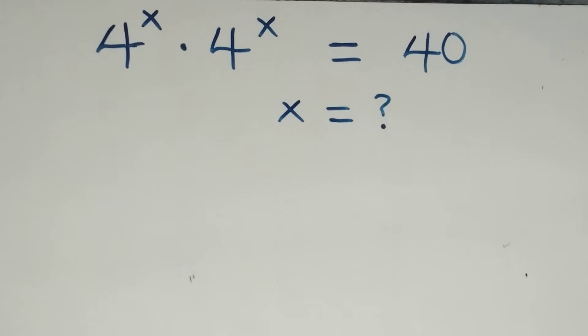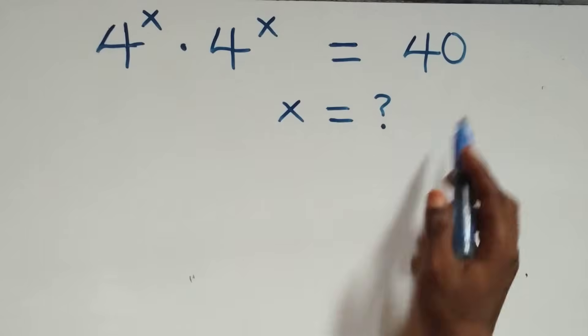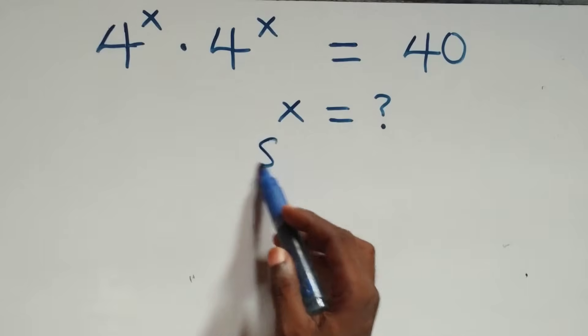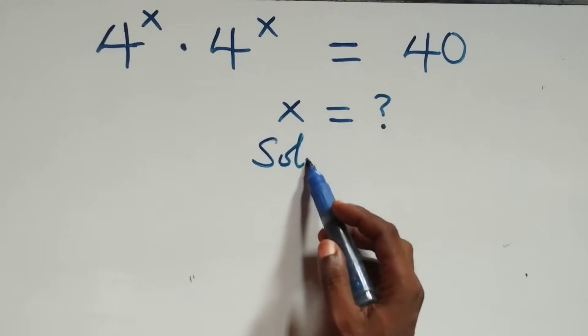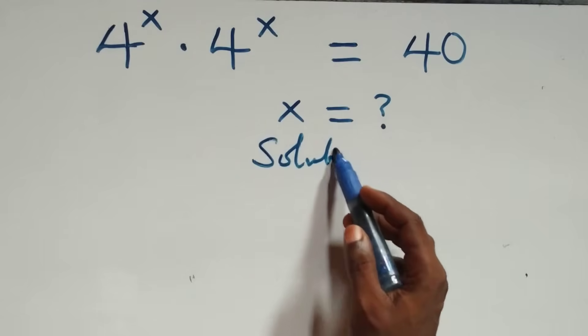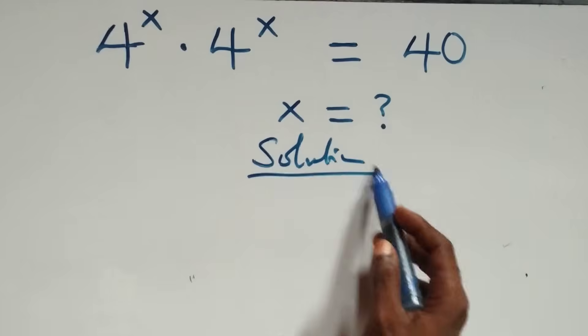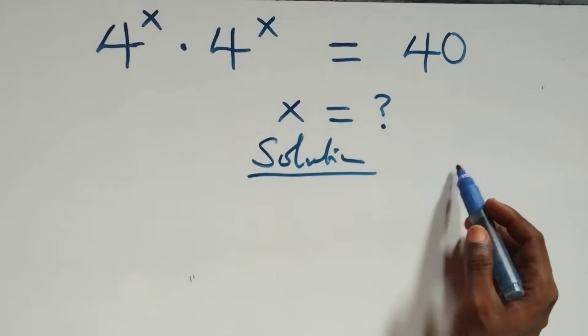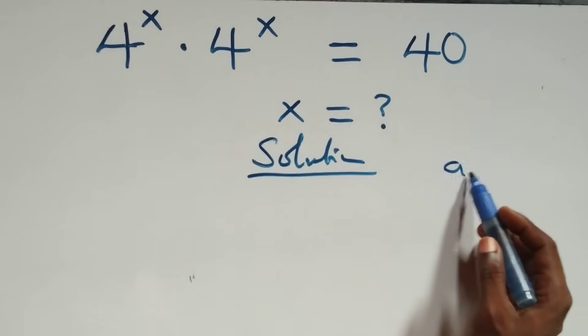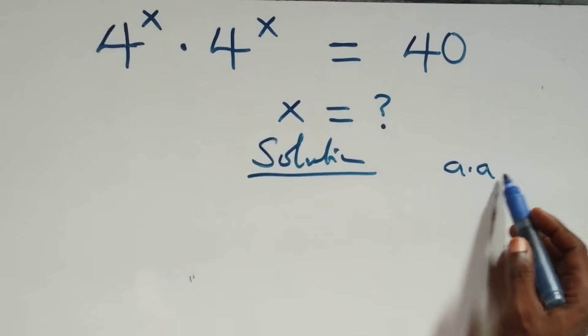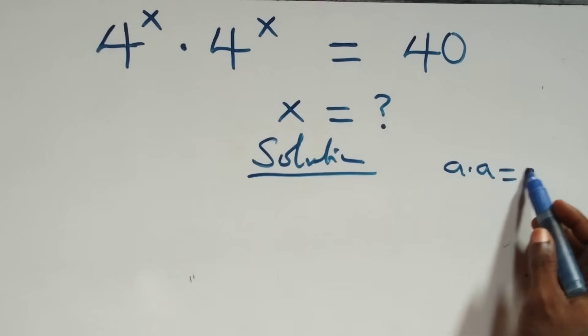How to solve this nice exponential equation. From what we have here, this follows when we have a times a, which can be written as a squared.